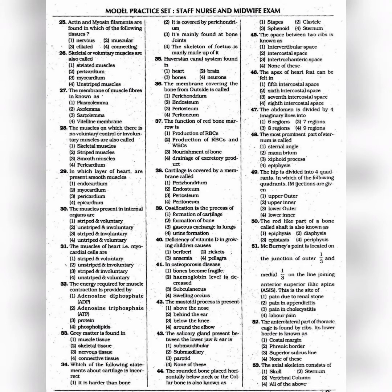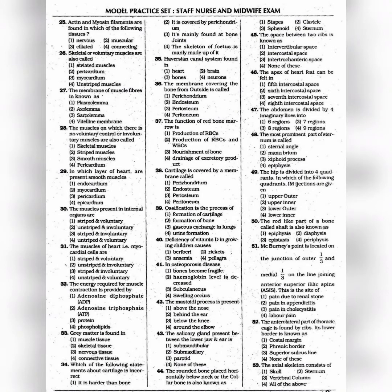Question 29: In which layer of heart are smooth muscles present — the answer is option 2: Myocardium. Question 30: The muscles present in internal organs are — the answer is option 2: Unstriated and involuntary. Question 31: The muscles of the heart, that is myocardial cells, are — the answer is option 3: Striated and involuntary. Question 32: The energy required for muscle contraction is provided by — the answer is option 2: Adenosine triphosphate (ATP). Question 33: Grey matter is found in — the answer is option 3: Nervous tissue.